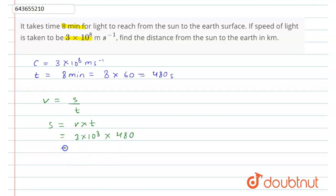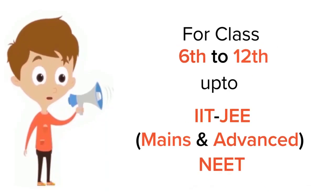From here, velocity is 3 × 10^8 and time is 480. By solving it, what we get is 1.44 × 10^8 kilometers. So this is the distance between earth and sun.